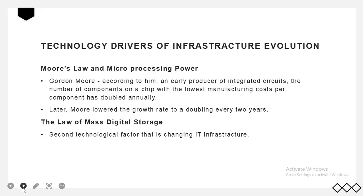The second driver is the law of mass digital storage. Every year, the amount of digital information nearly doubles. Fortunately, the price of digital data storage is decreasing at an exponential rate of approximately 100% annually, making large-scale data storage increasingly affordable.